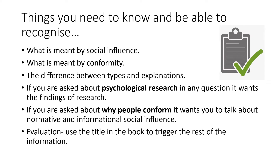First of all, what do we actually mean by social influence? You need to know what that means. What is meant by conformity? We'll look through a definition. You need to know the difference between types and explanations — this is something that students do get confused about, so hopefully I'll give you some indication as to how to remember those. This next bullet point is something I picked out of an exam question where students got quite confused about what it was actually asking.